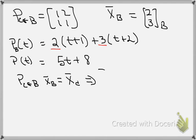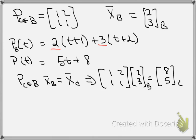So this would then give me the matrix transition matrix 1, 2, 1, 1. I'm going to multiply that by 2, 3. This is the vector written in terms of B, and when I do that I'm going to get 2 + 6, which is 8, and I'm going to get 2 + 3, which is 5. So these are the coordinates for the vector written in terms of C, namely 8 and 5.